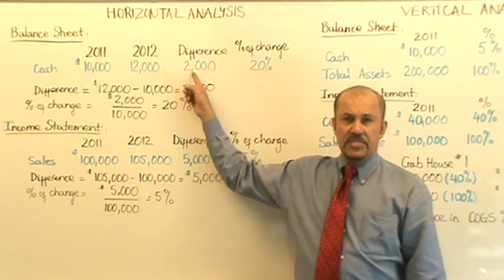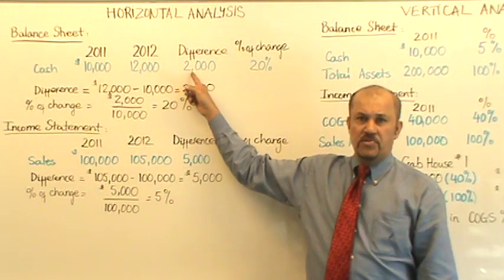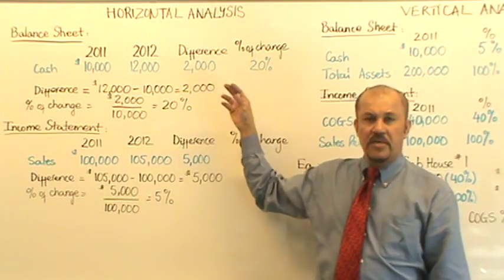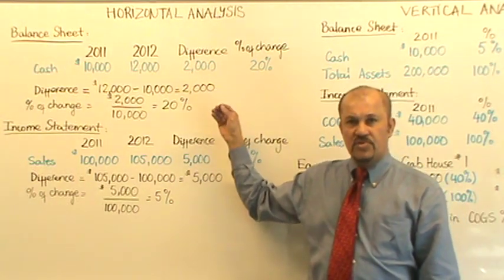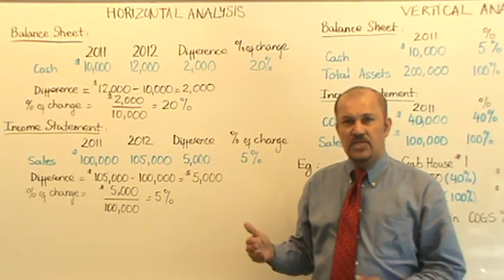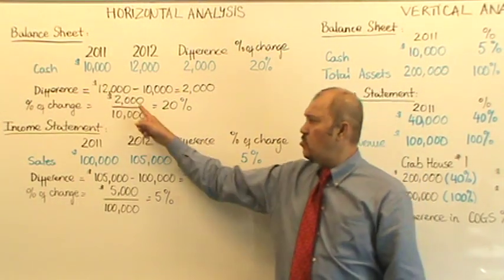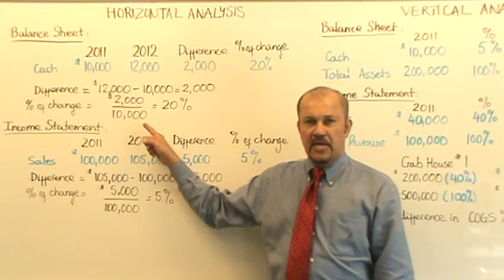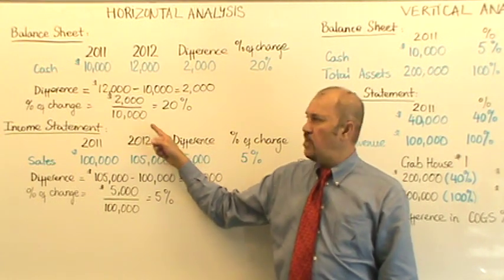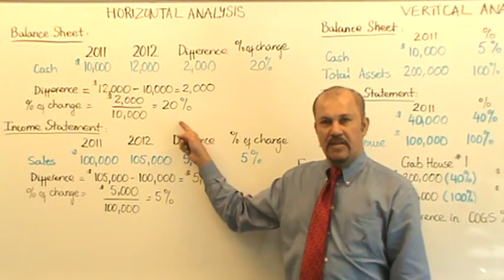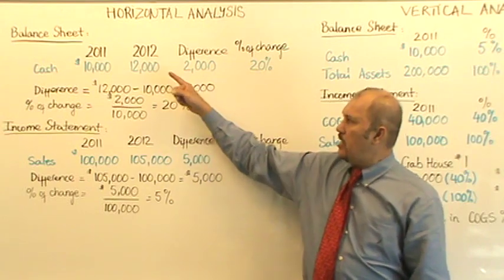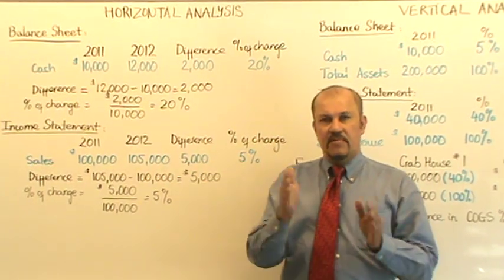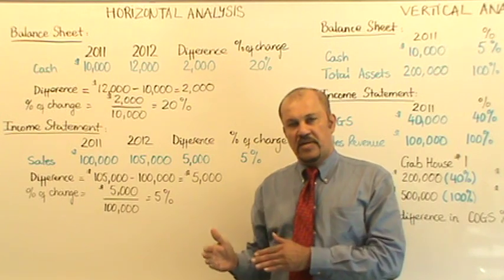That increase in this example works out to $2,000. Step two is to express this increase of $2,000 as a percentage of the old year, the base year. So $2,000 expressed as a percentage of $10,000 is 20%. So our cash has increased by 20% from 2011 to 2012.